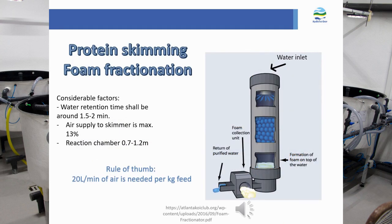Foam fractionation is a method to remove proteins, lipids, fats, and other solubles from the water. The most common equipment is the protein skimmer. Water enters from the top of the column and trickles down to the bottom. Inside the chamber, air bubbles attach to suspended solids, reducing their density. This method is very effective at removing hydrophobic substances such as oil and fat.